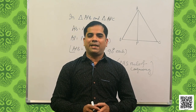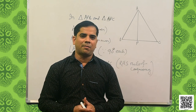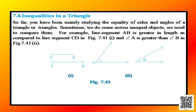We have now completed exercise 7.3. Let us now discuss some more concepts about triangles — inequalities in a triangle. So far we have been mainly studying the equality of sides and angles. Sometimes we come across unequal objects and need to compare them. For example, line segment AB is greater than CD, and angle A is greater than angle B.